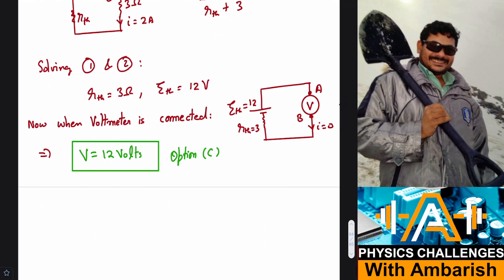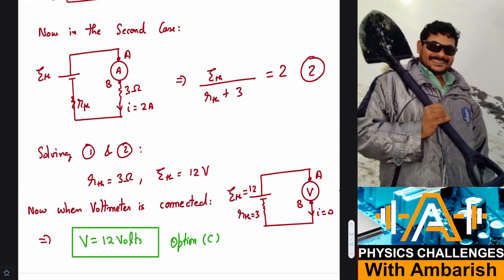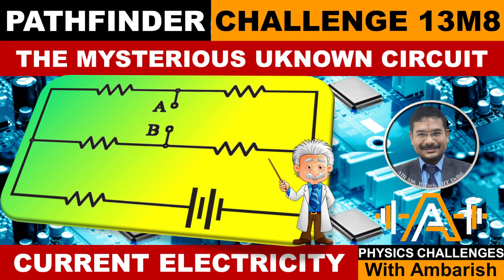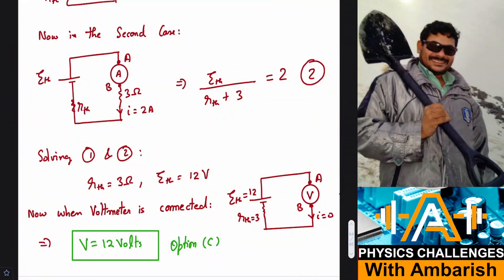The answer is option C — 12 volts. That was my analysis of MCQ problem 8 from current electricity from Pathfinder. I hope you appreciated the analysis. If you did, please give a thumbs up and share this video as much as possible with your friends.